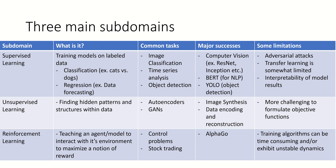The third category is reinforcement learning, which is a little different because you're essentially teaching an agent to interact with its environment to maximize some notion of reward. Use cases include control problems and stock trading. One big success that really dwarfs the others is AlphaGo, where reinforcement learning algorithms were used to beat the world champion Go player. The issue with reinforcement learning is that it can be time-consuming and can have unstable training dynamics, with considerations around training time, performance, and RAM — so it's not always easy to set up practically.